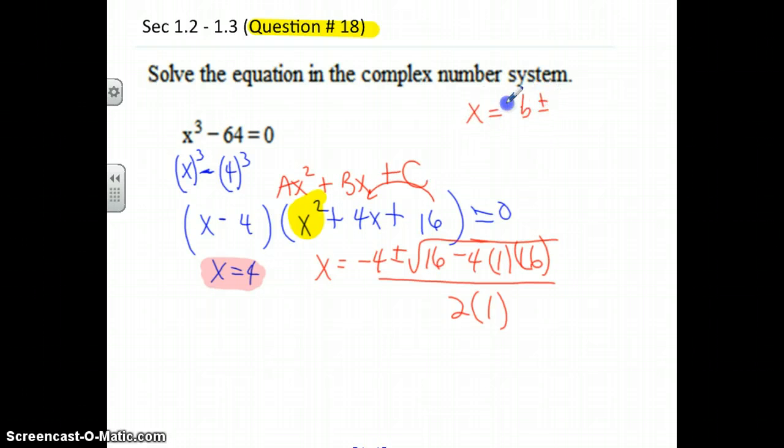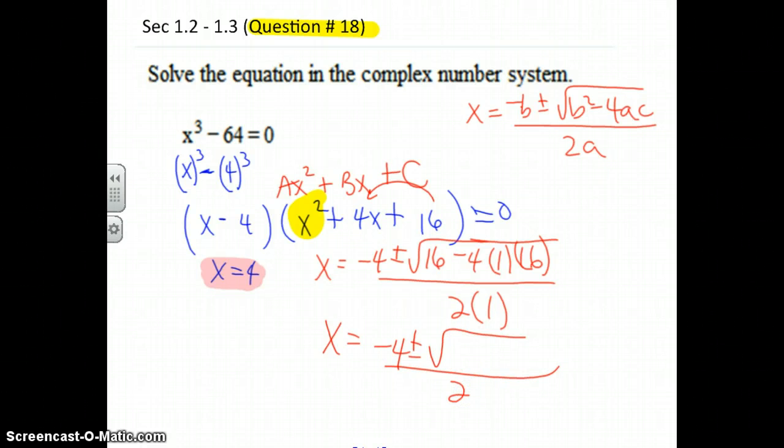x is equal to negative 4 plus or minus the square root of—my suggestion is bust out a calculator and type in 16 minus 4 times 1 times 16—and you can see that gives us negative 48. So if I plug in a negative 48 here, every time I take the square root of a negative, out pops an i, those imaginary numbers. So I'm going to say negative 4 plus or minus the square root of negative 1, which is my i, and I'm going to try to come up with a perfect square that goes into 48.